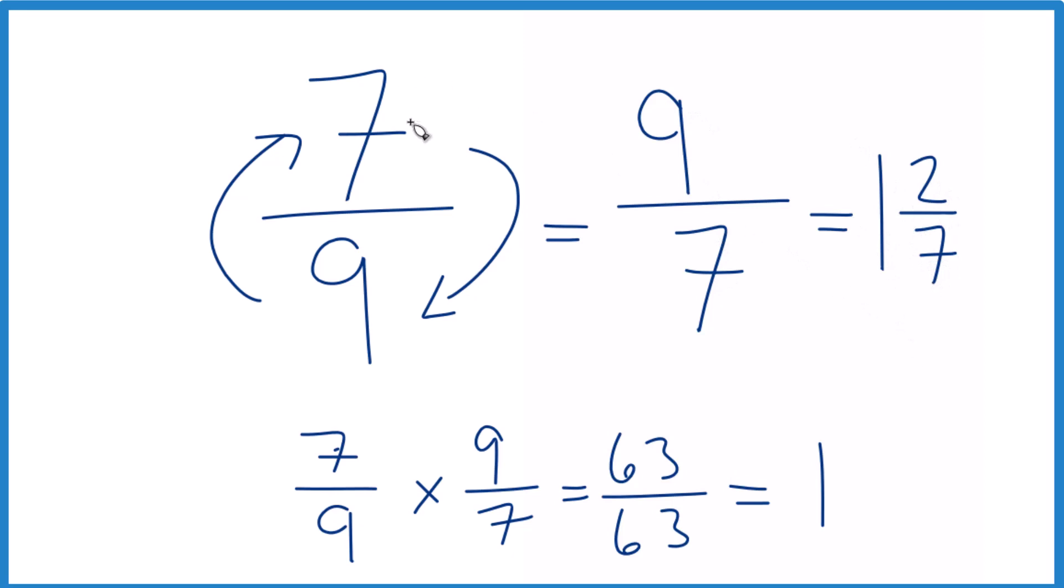Either way, when you find the reciprocal for seven-ninths, you get nine-sevenths, which you could also call one and two-sevenths.